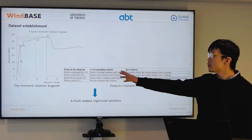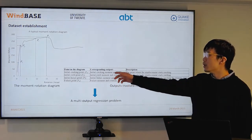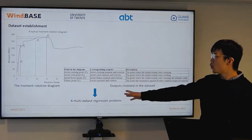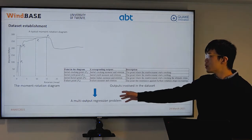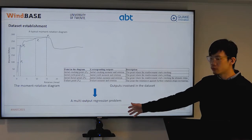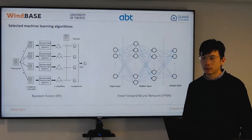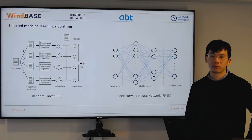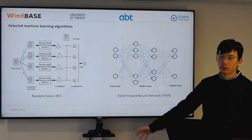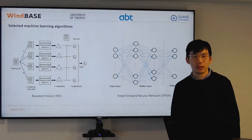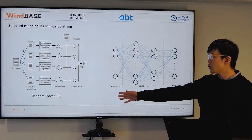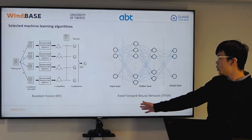However, we simplified the moment-rotation diagram, as shown on the left side of the screen, into four key points, which enables us to convert the whole problem into a multi-output regression problem. In order to tackle this multi-output regression problem, we selected two machine learning algorithms, considering their scalability, speed, accuracy, as well as interpretability, namely random forest and feedforward neural network.